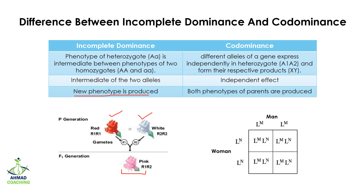In case of co-dominance, both phenotypes of the parents are produced. The man has blood group M and the woman has blood group N, but the offspring express blood group M as well as blood group N — expressing the blood group of both their father and their mother.